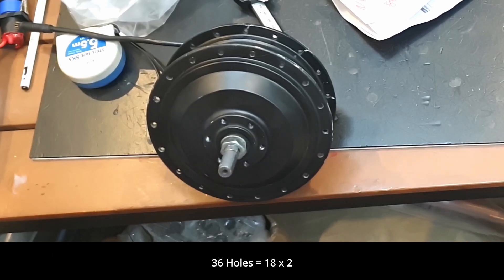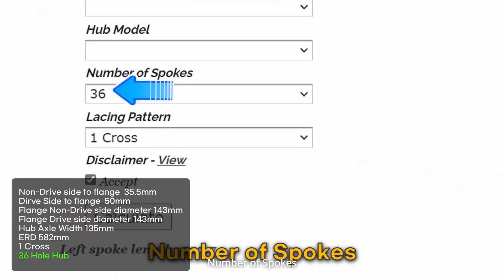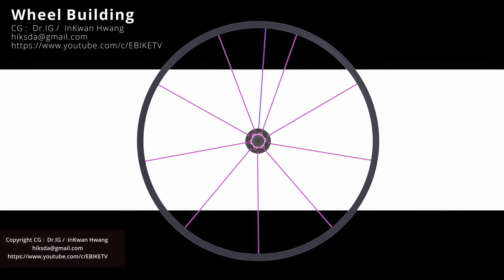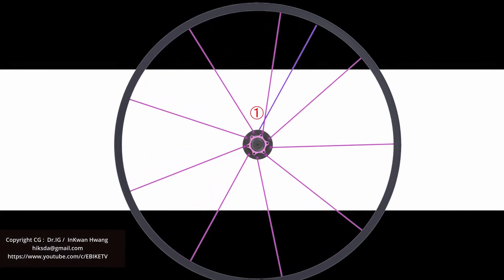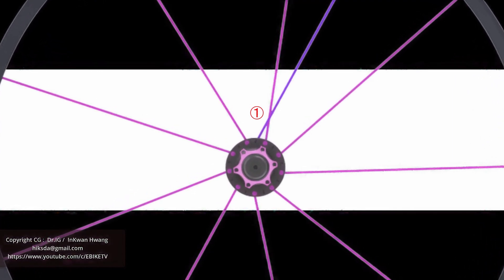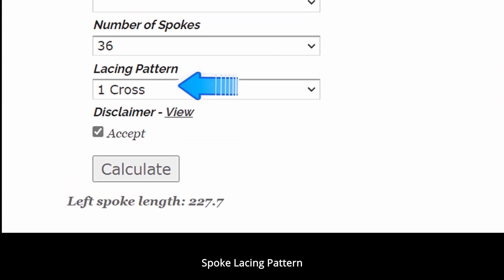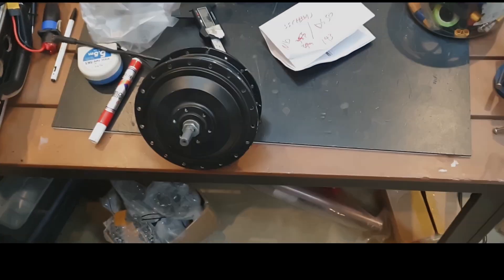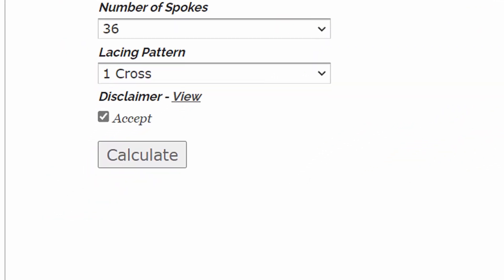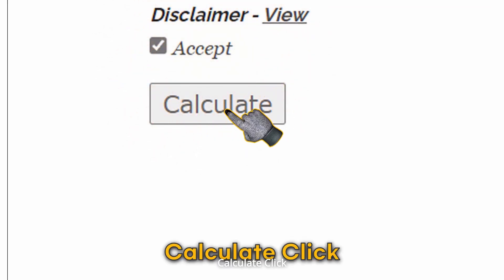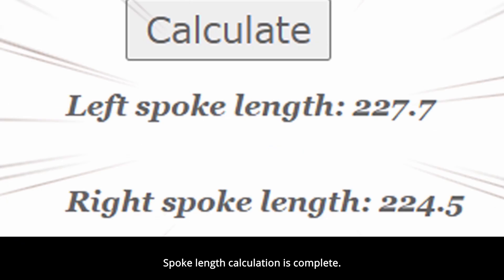Effective rim diameter. 36 holes equals 18 by 2. Number of spokes. Spoke lacing pattern. Order the spokes. Accept click. Calculate click. Spoke length calculation is complete.